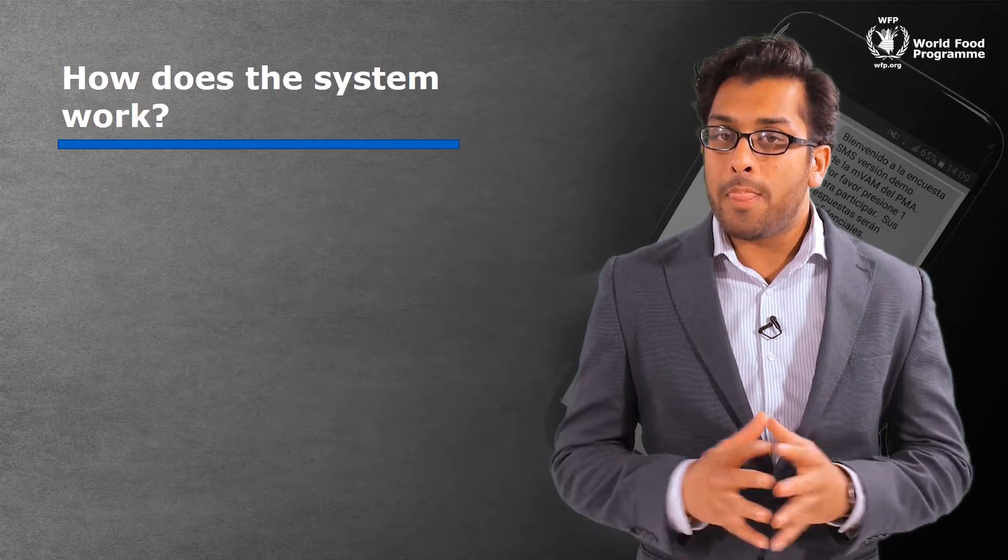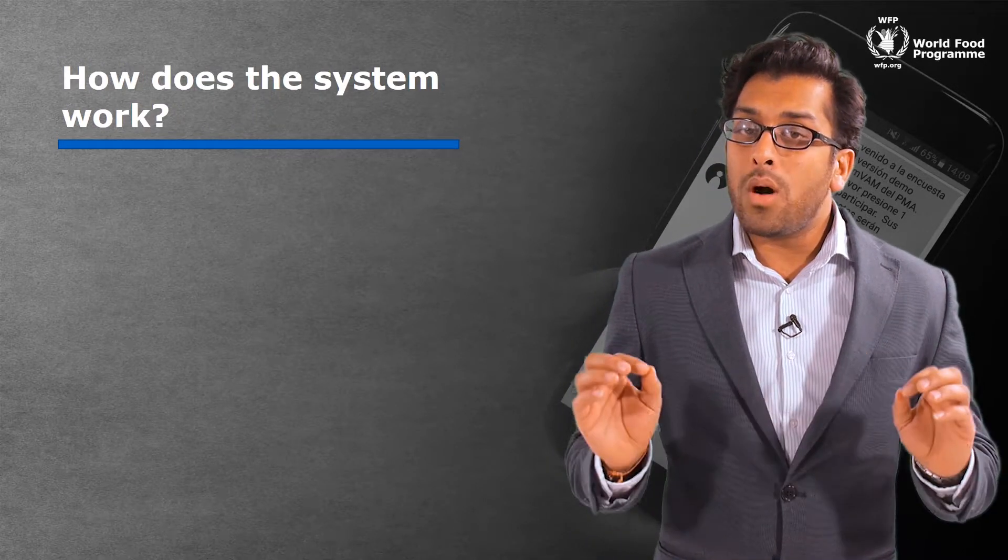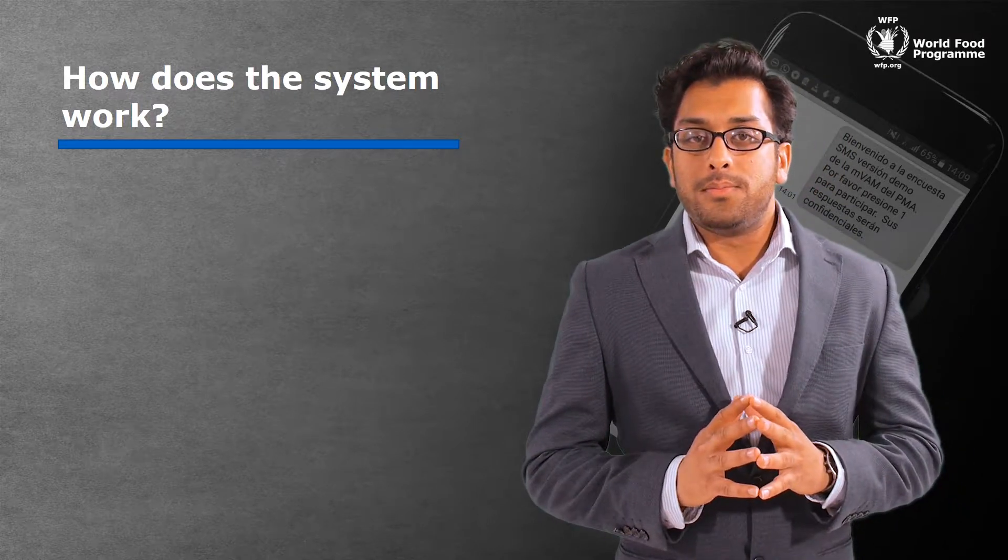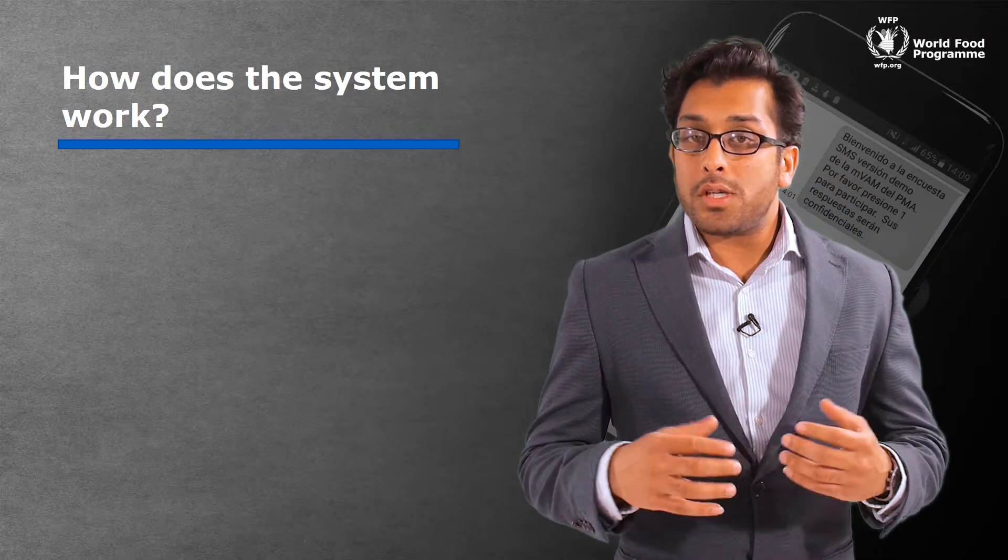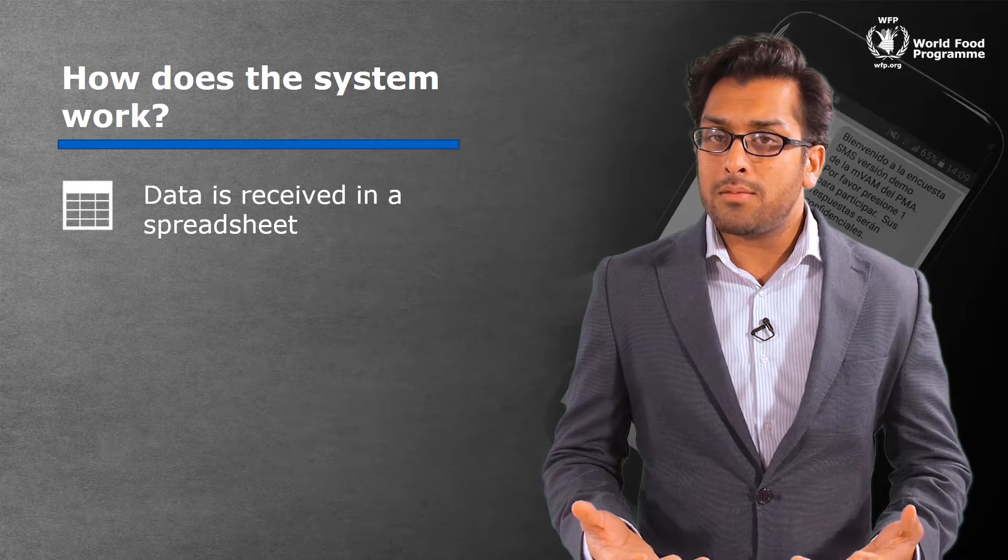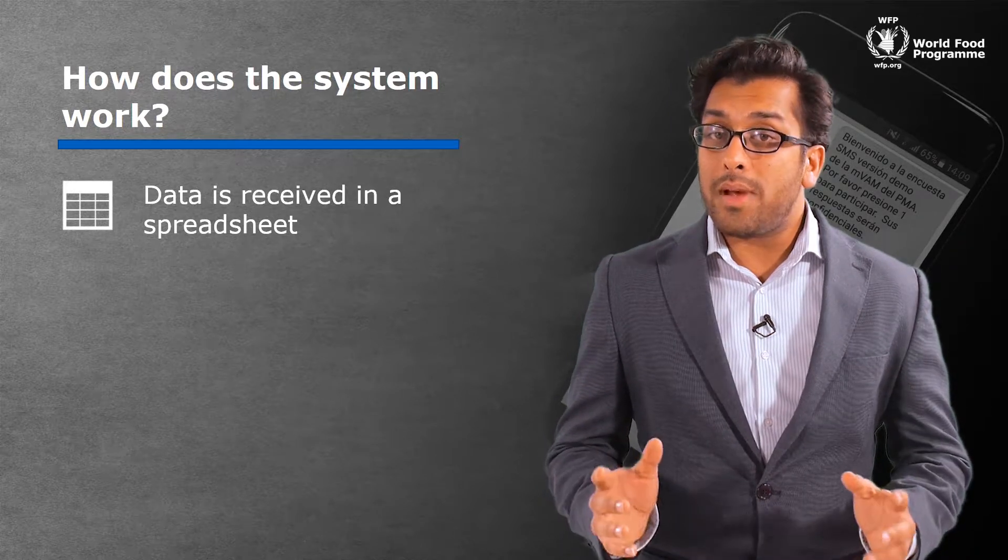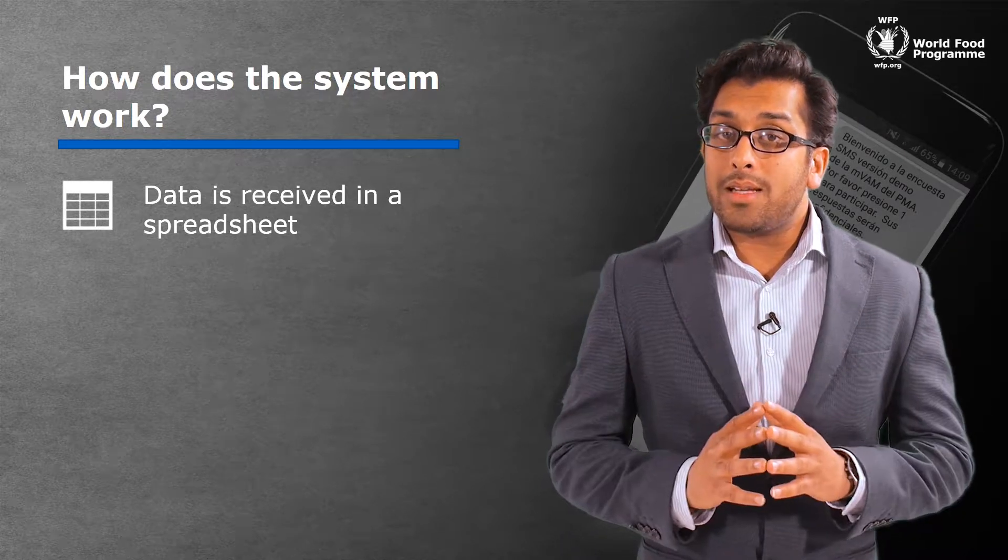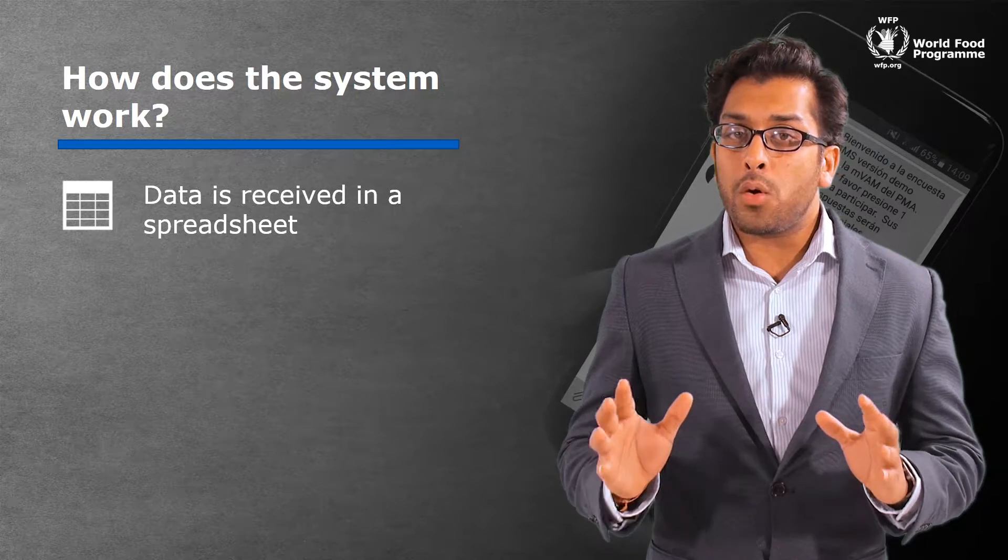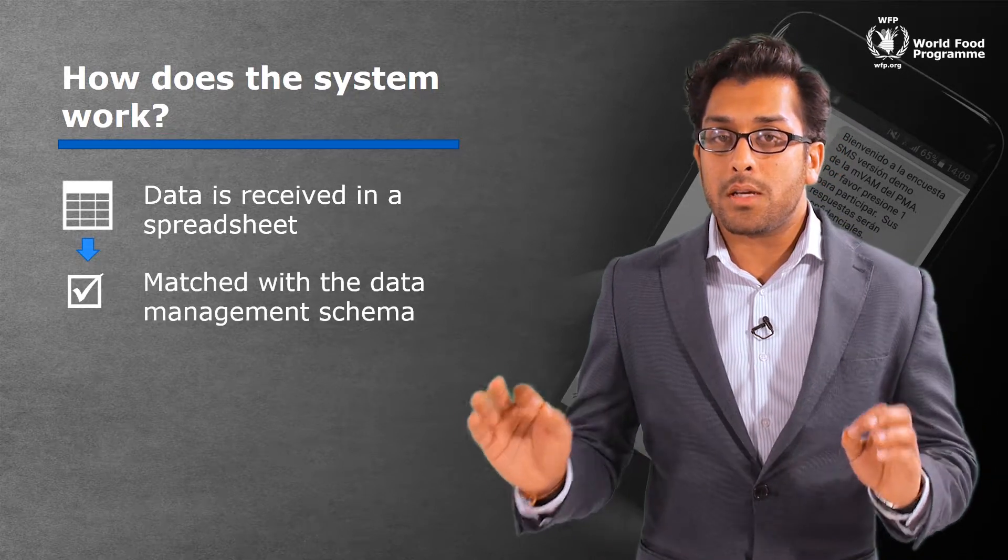And now, how does it work? Well, it all begins with the raw data. Usually it is received as a spreadsheet or some kind of flat file. However, the first step is manual. You, the data analyst, must make sure that your raw data set matches VAM's data management schema.